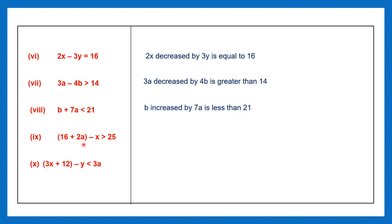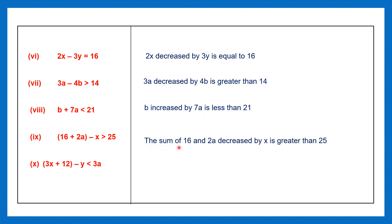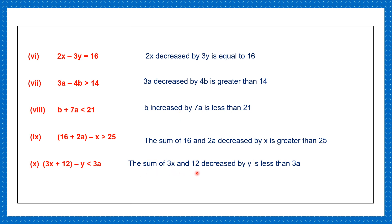Next one: the sum of 16 and 2a minus x is greater than 25. The sum of 16 and 2a — especially when it's in brackets, use the words 'the sum of.' So: the sum of 16 and 2a decreased by x is greater than 25. Next one: the sum of 3x and 12 minus y is less than 3a. Or: the sum of 3x and 12 decreased by y is less than 3a.